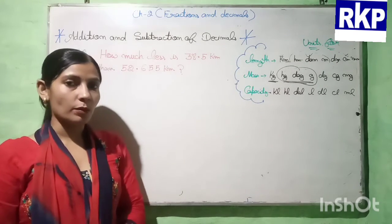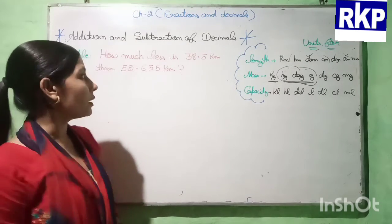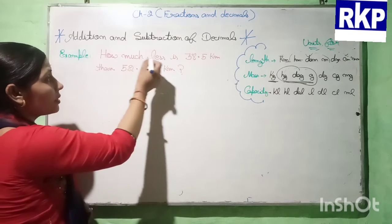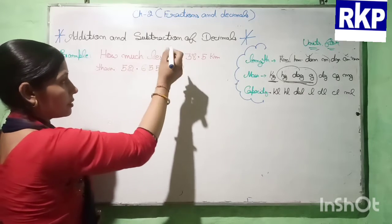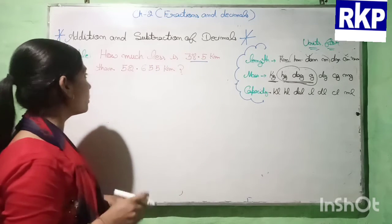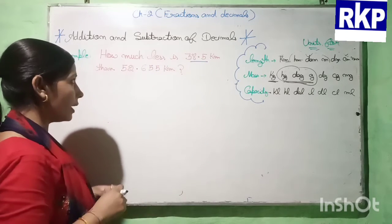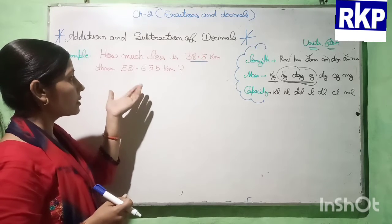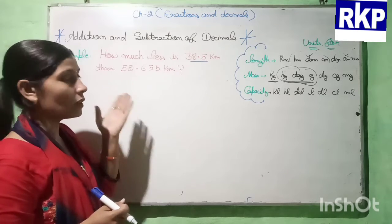Now students, let us take one more example. How much less is 38.5 kilometers than 52.655 kilometers?